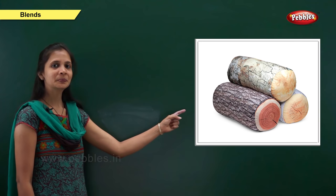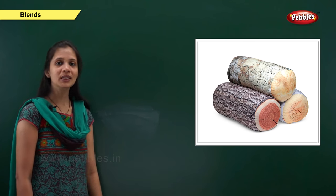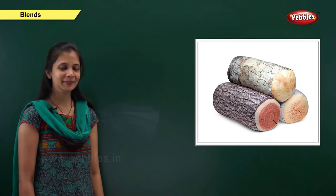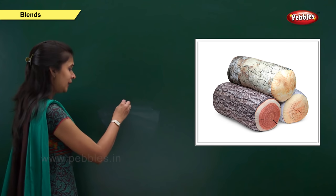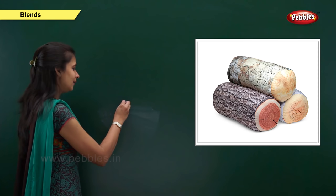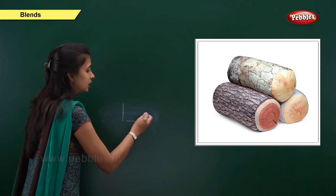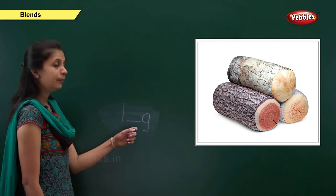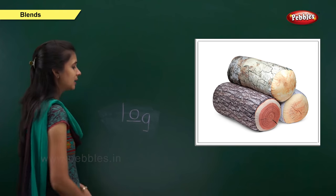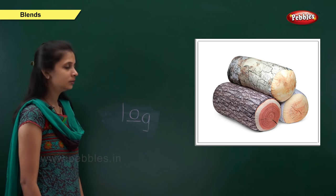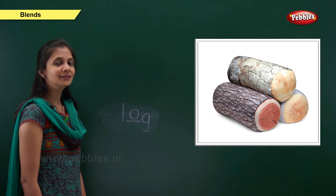Next one. Which picture is this? Yes, it is log. What is the sound of this word? It is l, o, g. When the sound is 'l', the letter is l. When the sound is 'g', the letter is g. Middle sound is 'o', the letter is o. So: l, o, g — log.